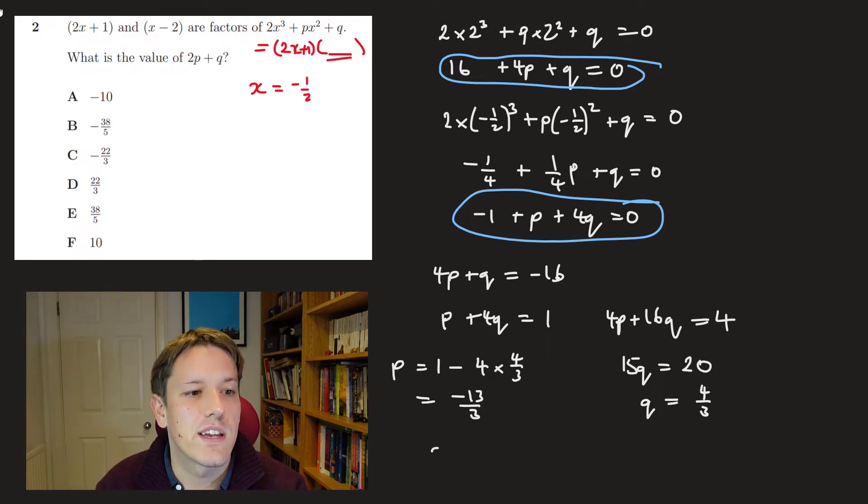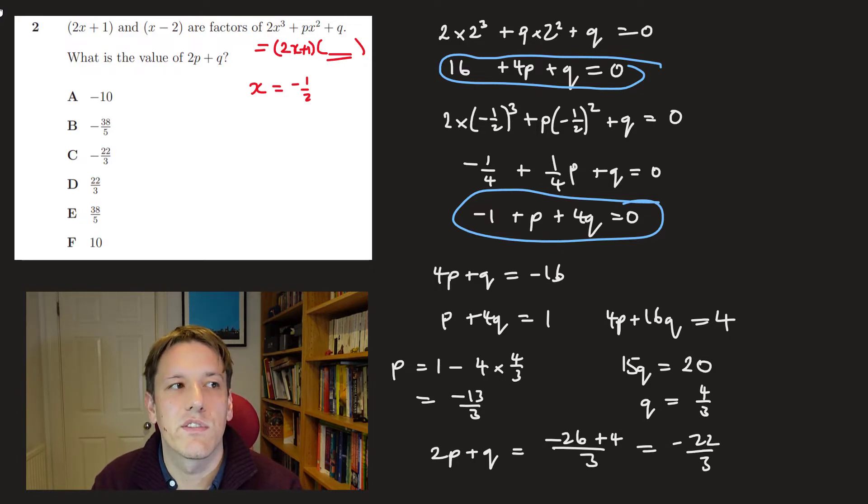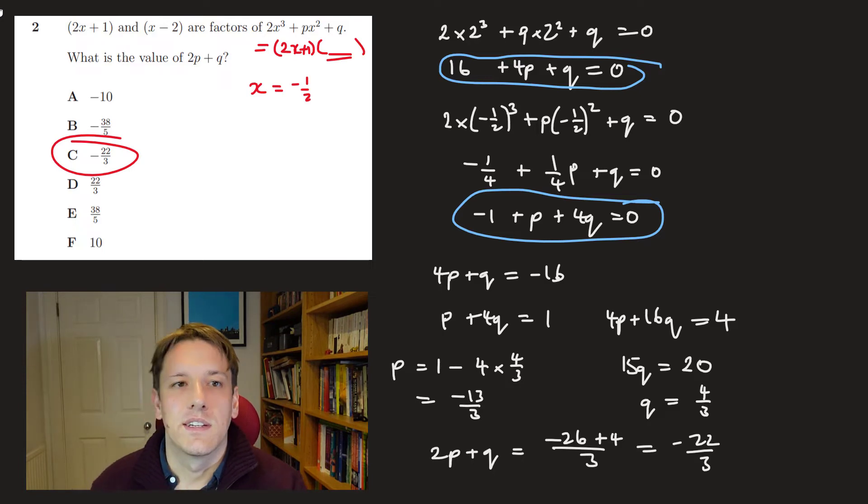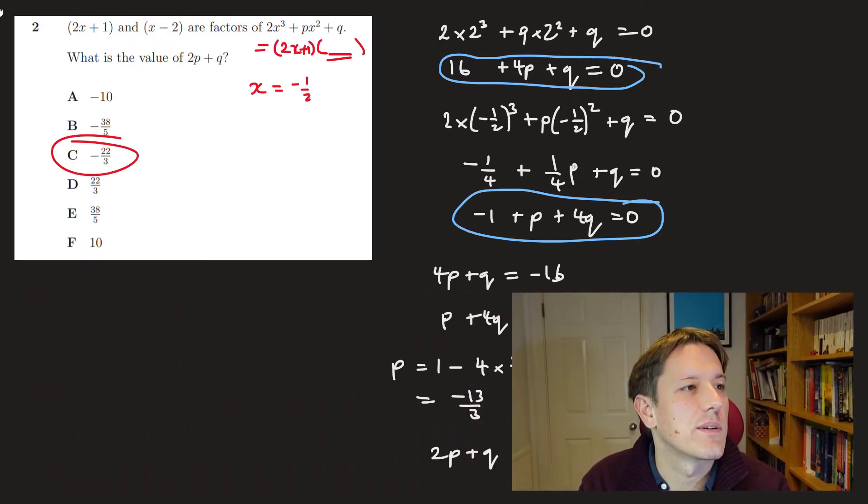So that's 3 minus 16 over 3, which is -13 over 3. And then finally, we can put it all together and say, okay, that means that 2p + q, that's -26 plus 4 over 3, which is -22 over 3. So a little bit of algebra there. Perhaps you can find a faster route to get 2p + q directly or something, but that's not going to take you too long in the test. You should be fast at these sorts of methods. But do put in the comments if you can see a nice, easy, fast way to get 2p + q here without working out p and q first. Perhaps that's possible.